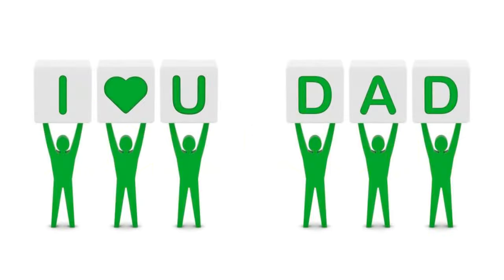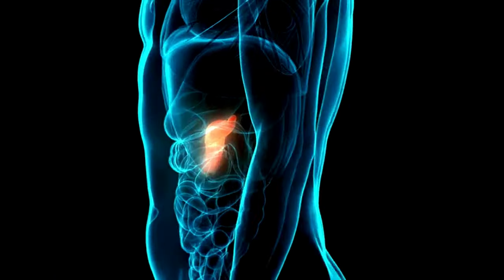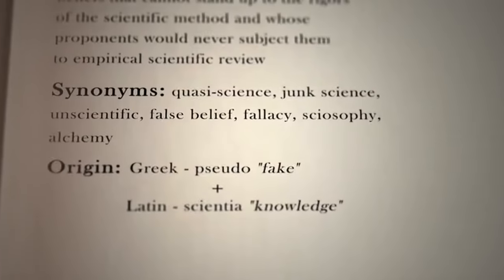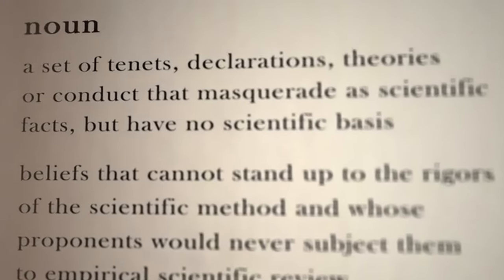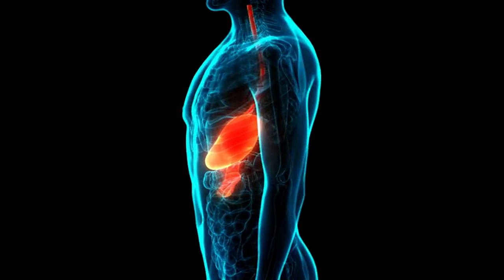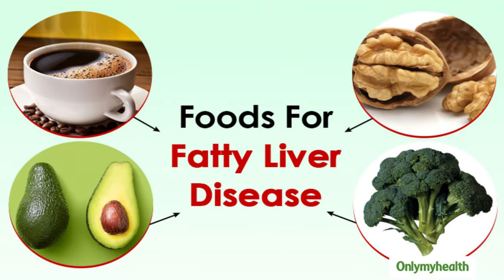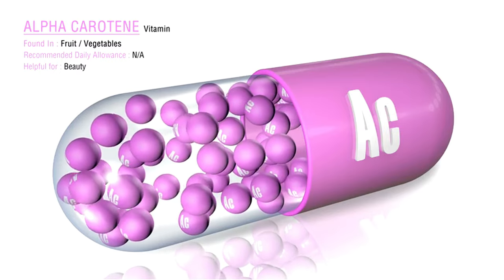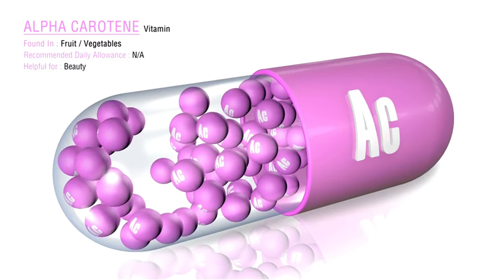Ursodeoxycholic acid (UDCA) has shown promise in improving liver function, reducing liver enzyme levels, and alleviating liver inflammation in patients with NAFLD, though its efficacy in NASH remains debated and further research is needed. N-acetylcysteine (NAC) — a precursor to glutathione, the body's master antioxidant — has shown potential in reducing liver fat content, oxidative stress, and inflammation in patients with NAFLD, bolstering the body's antioxidant defenses and offering a beacon of hope for those seeking relief from liver disease.